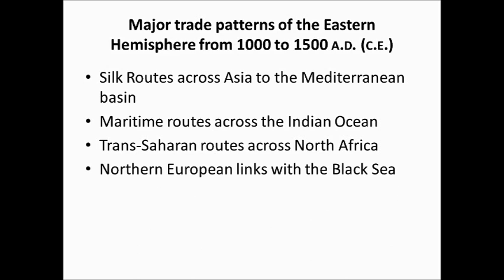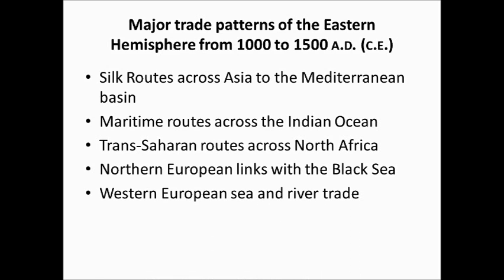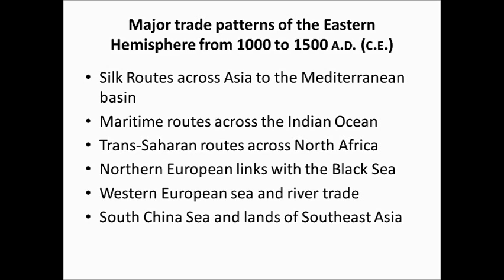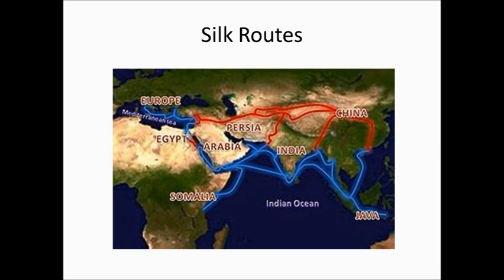There were trans-Saharan routes across North Africa, mainly gold-for-salt trading, but other items were traded too. Northern European links with the Black Sea were mainly for selling fish — herring — and a product called amber, which we'll talk more about later. Western Europe had sea trades and river trade routes. And the South China Sea and lands of Southeast Asia played a major role, not only in producing and sending goods but in spreading technology and religions.